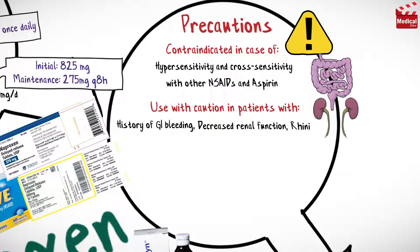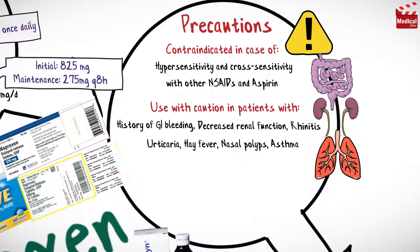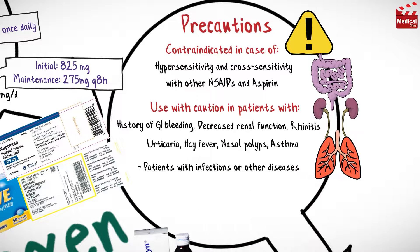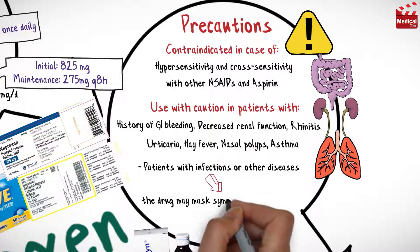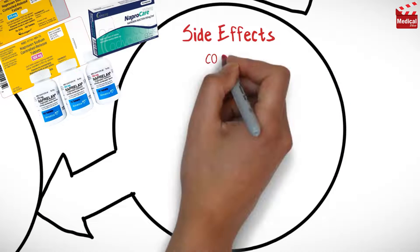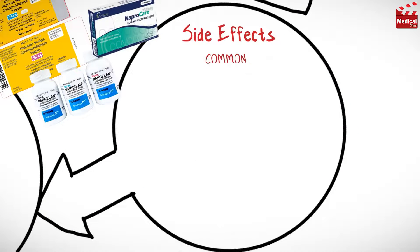Use with caution in patients with a history of gastrointestinal bleeding, decreased renal function, rhinitis, hay fever, nasal polyps, and asthma. Administer naproxen with caution in patients with infections or other diseases, as the drug may mask symptoms such as fever and inflammation.